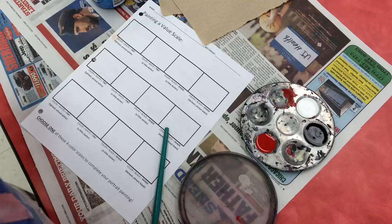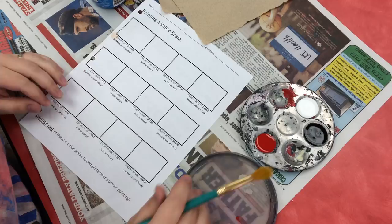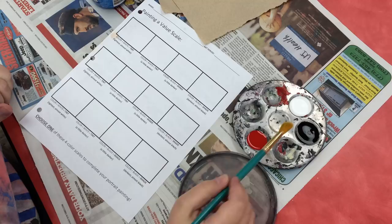Today I'm going to show you how to paint a value scale using tempera paint. You're going to need one color of paint that you want to make the main color of the value scale. You'll need white to mix tints and black to mix shades.